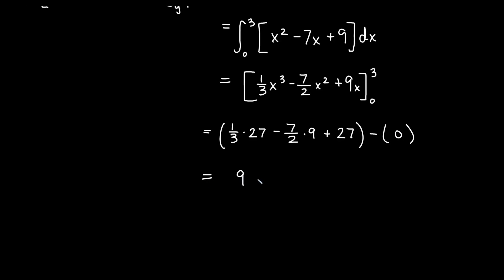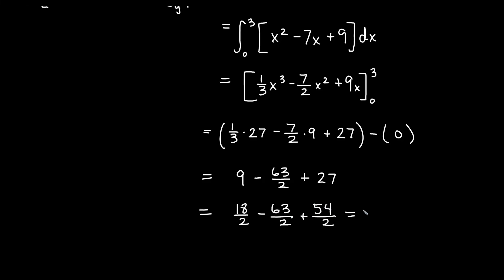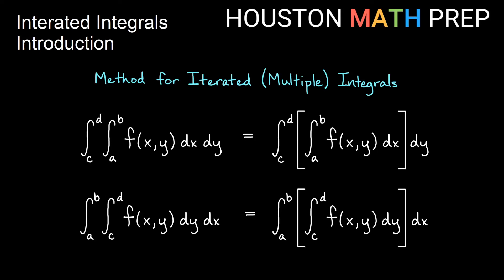Getting a common denominator: 18 over 2 minus 63 over 2 plus 54 over 2, which gives us 72 minus 63 equals 9 over 2 for our answer. The important thing to remember: when you have an iterated integral and you're integrating dx dy, do the inside first — integrate with respect to x and plug in its bounds, then integrate the remaining expression with respect to y. If integrating dy dx, first integrate with respect to y and plug in y bounds, then take the antiderivative with respect to x and plug in x bounds.